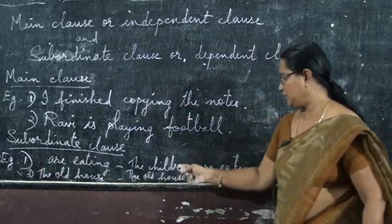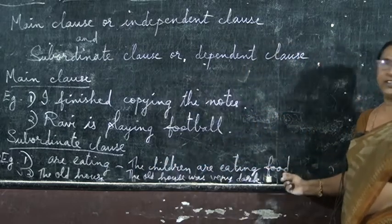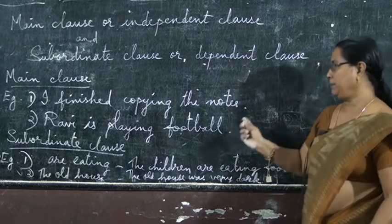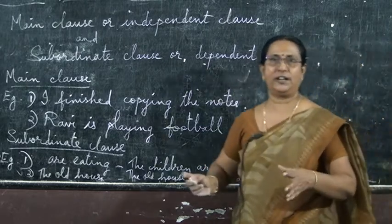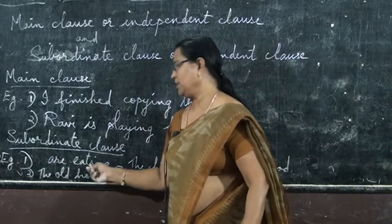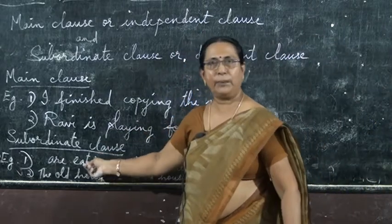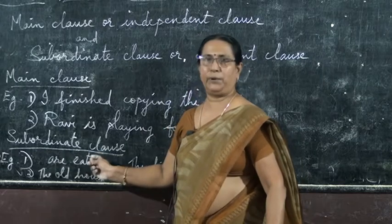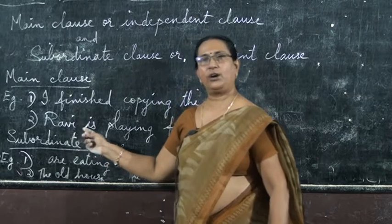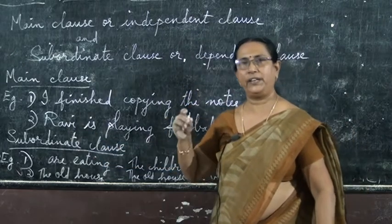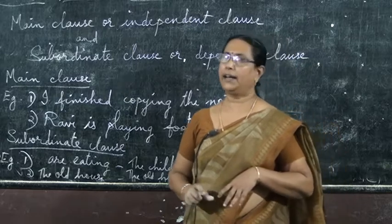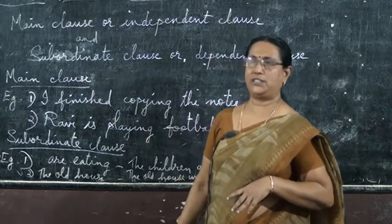For example, 'the children are eating food' — now this is a complete sentence, you get the meaning. But 'are eating' alone does not have a complete meaning; only half is given. So a subordinate clause or dependent clause always depends upon another sentence to get the correct meaning of the full sentence.